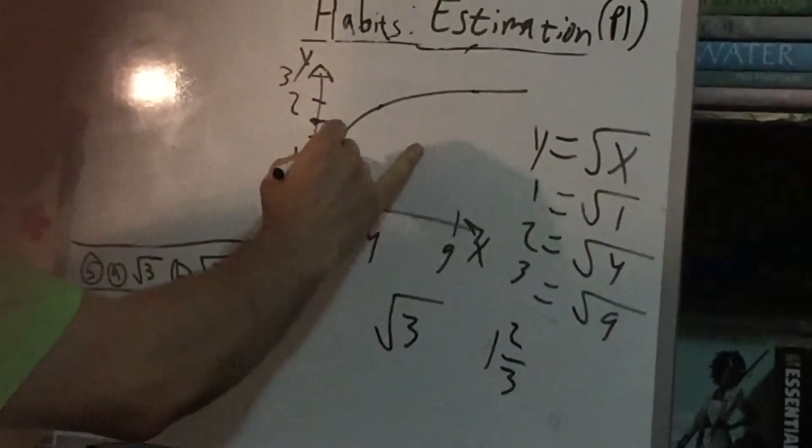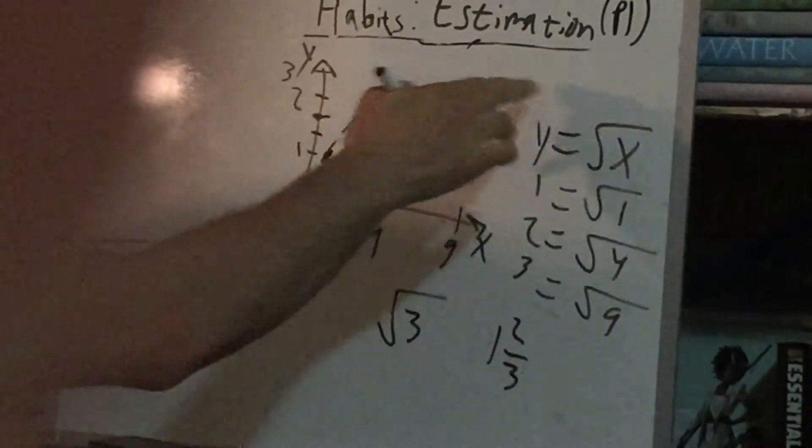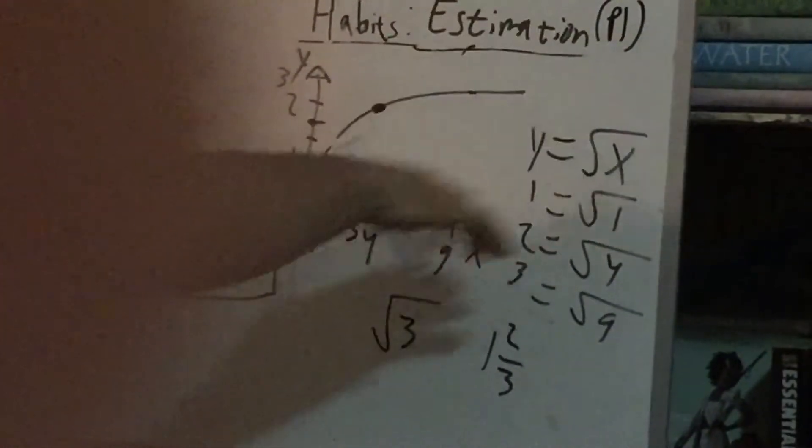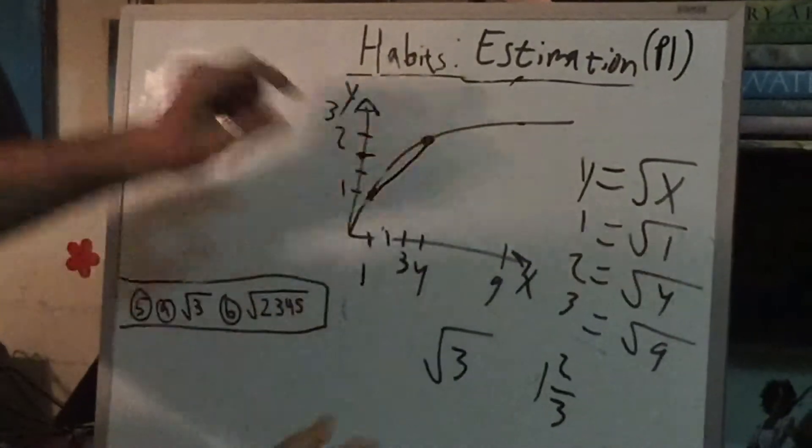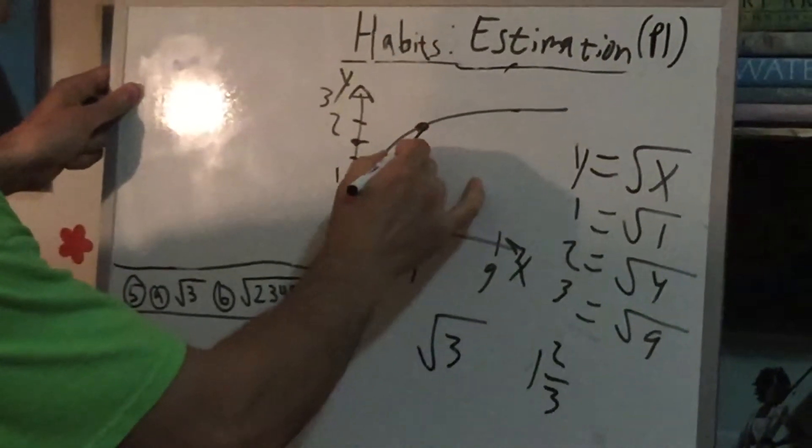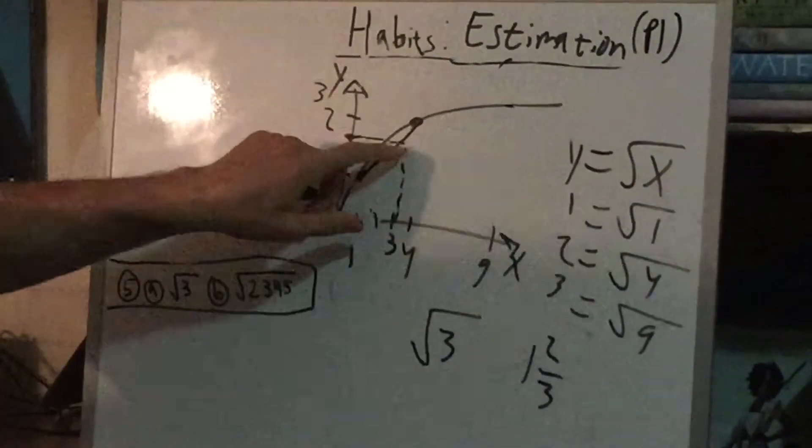So using that argument, we're basically treating this function or this equation, this curve, like a line. Now, on a line, that would be correct, because this would correspond to that point, and we would have nailed it.